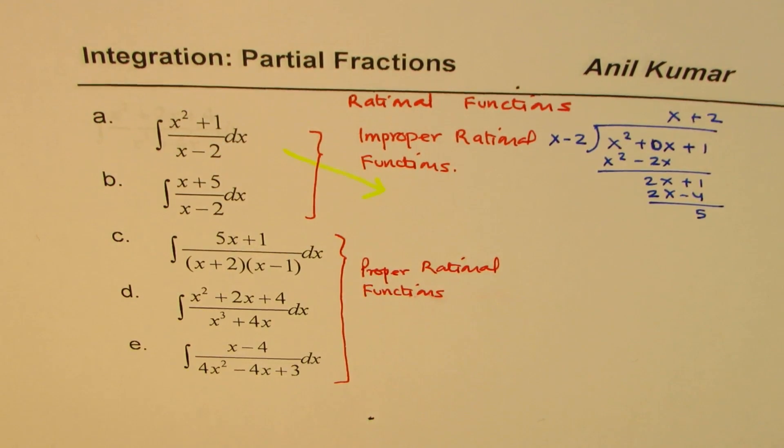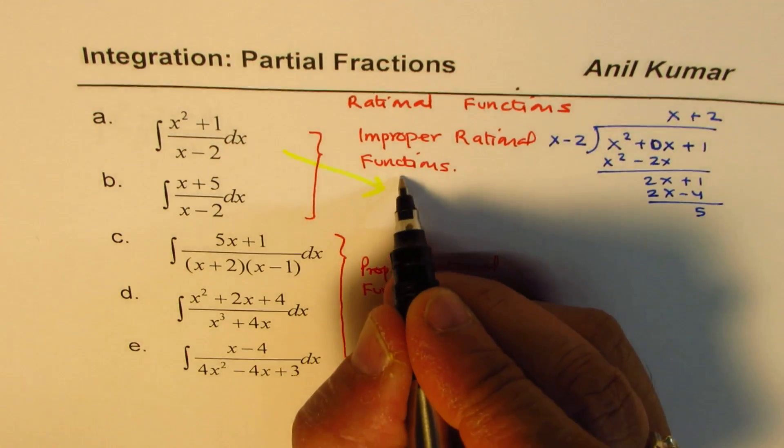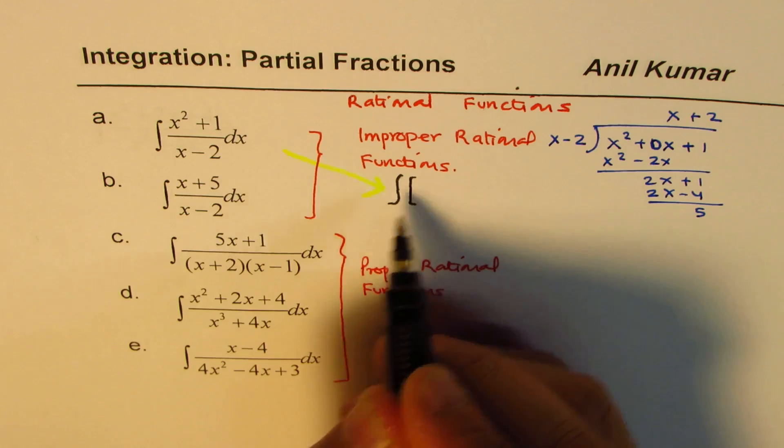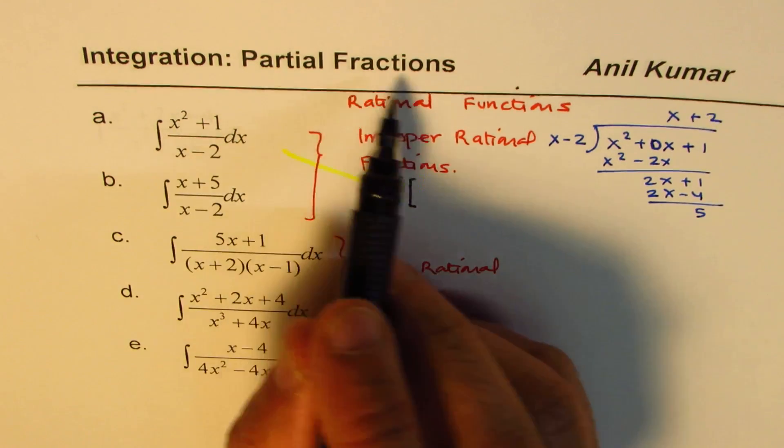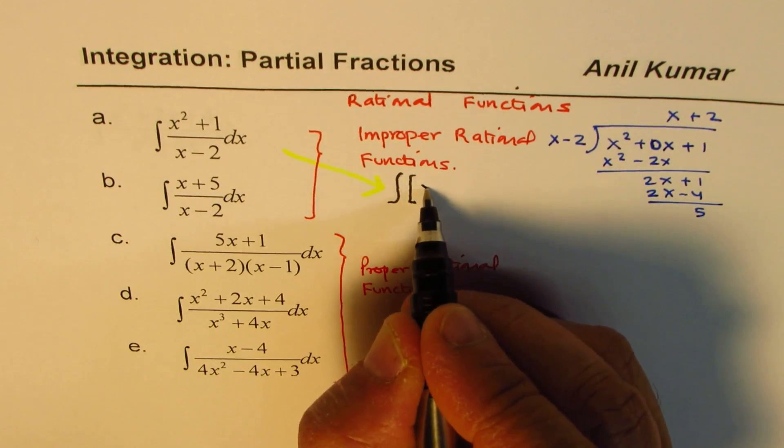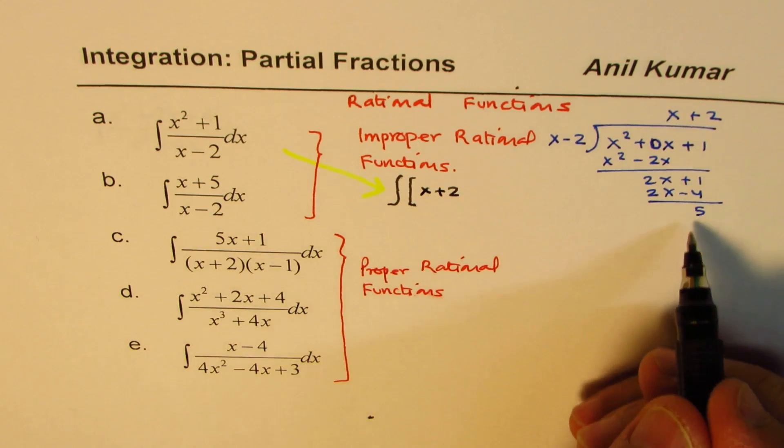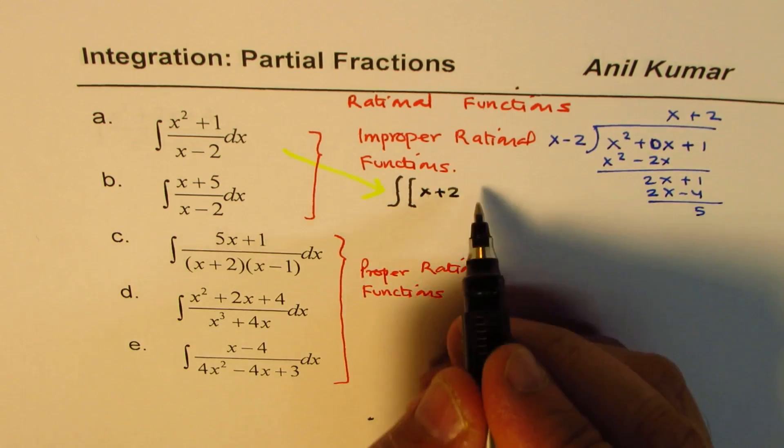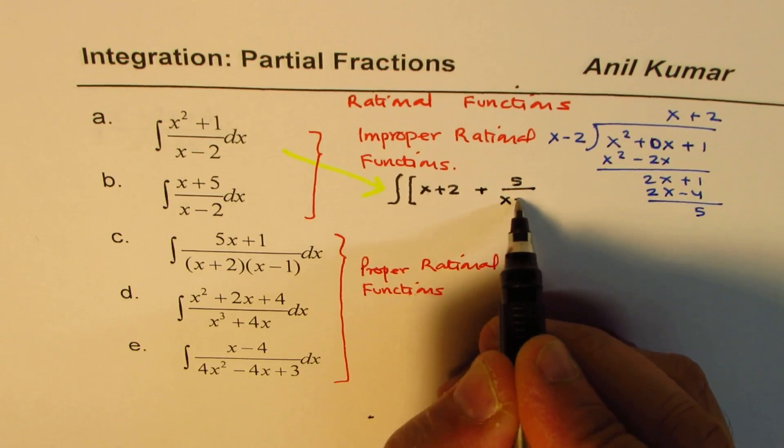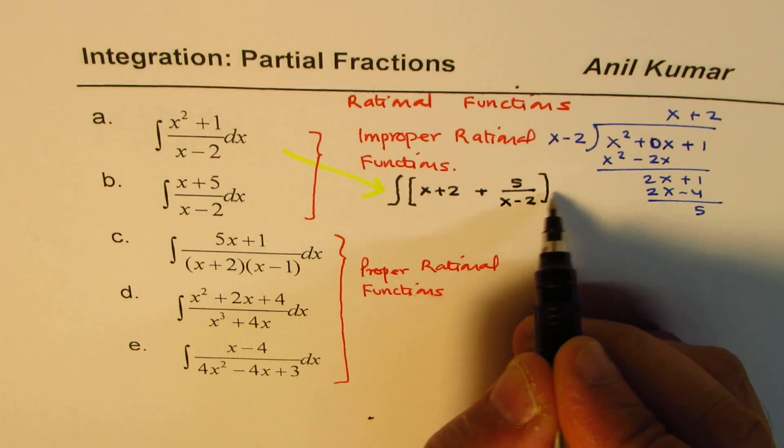And therefore, this particular function could be written as the combination of these two. So I have done for this, so let me just show you. So you have to divide this one also to get it in this form. So the form which you will write this function as, that should be your first step. So integration will be of, divide this into fractions, right, different factors. So x plus two is a whole number, kind of, right, do you see that? Remainder is five, plus five, so it's a plus five over x minus two, d of x.